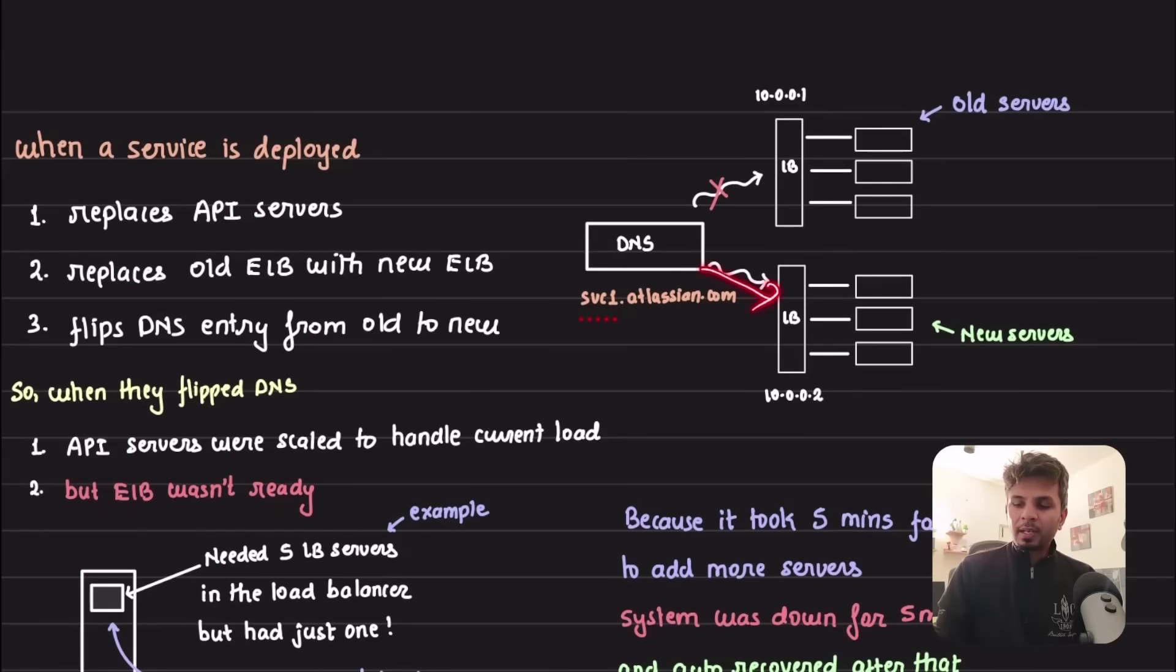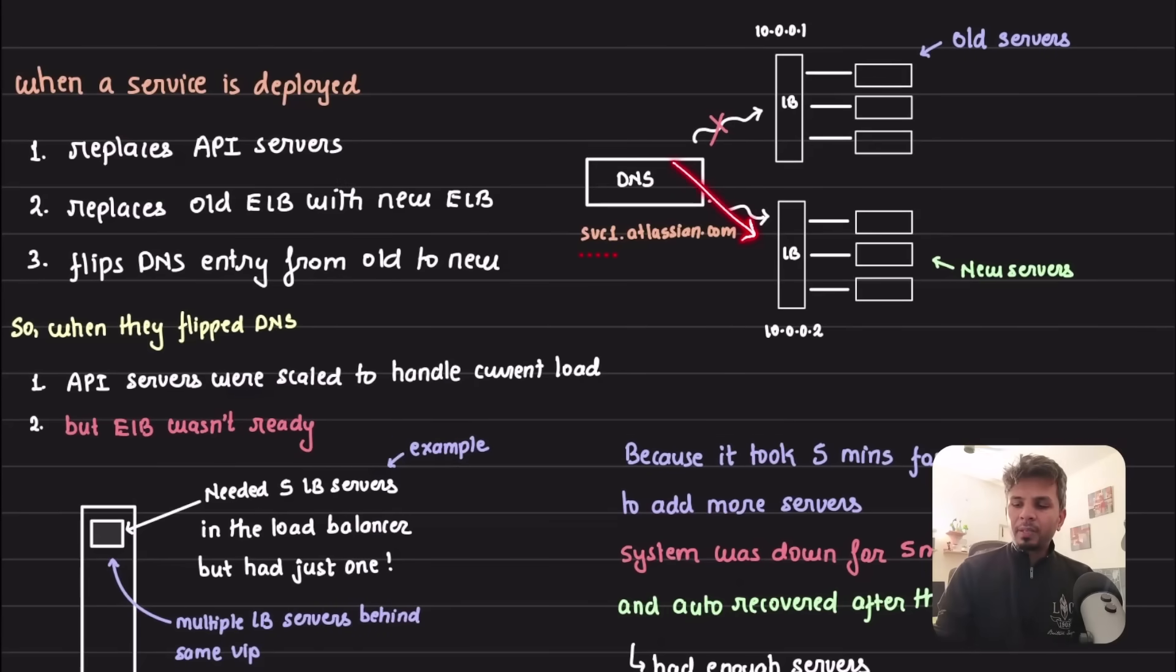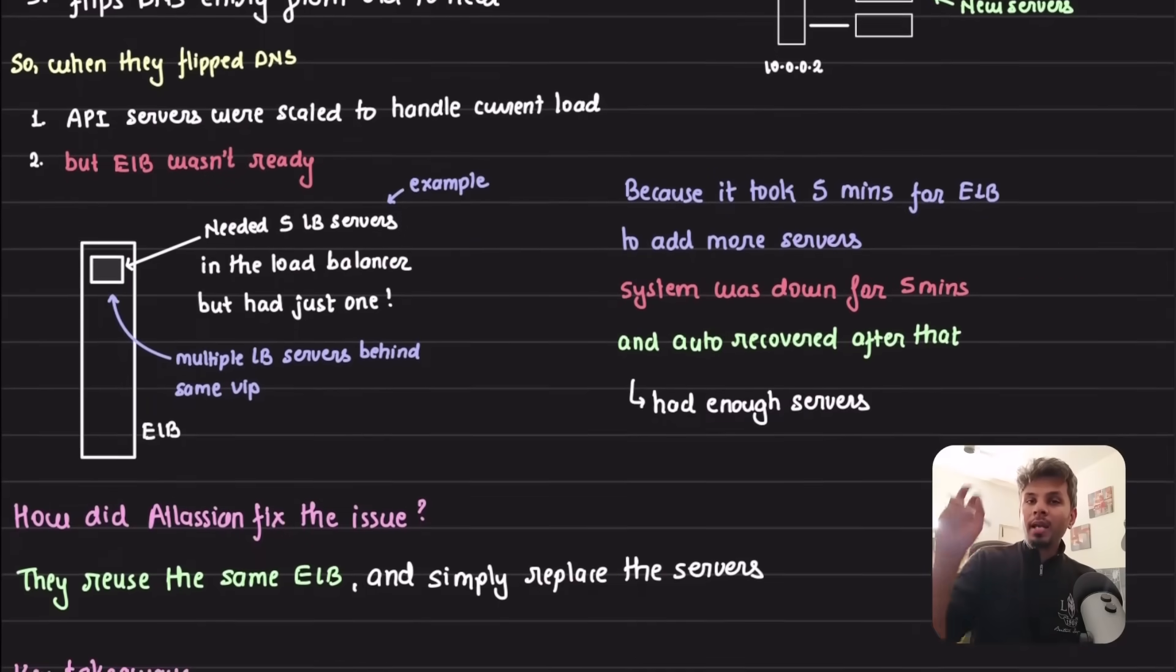When a new ELB was created, it had two LB servers inside it which can handle let's say 20,000 requests per second. But as the DNS flipped, the incoming 100,000 requests per second started going to load balancer two. There are two LB servers, each capable of handling 10,000 requests per second, so in totality they can handle 20,000 requests per second, but the current load is 100,000. What about the remaining 80,000? Because of that, they saw a dip in the number of requests the load balancer could handle because it was not warm enough.